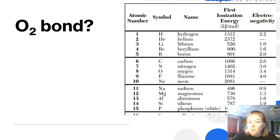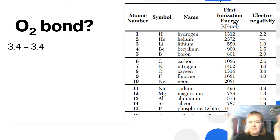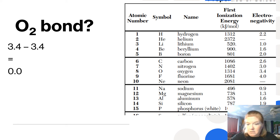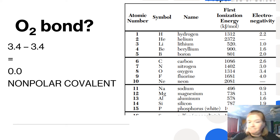What about O2? That means two oxygens bonding — oxygen and oxygen. When I subtract those, I just get 0. That gives us a nonpolar covalent bond.